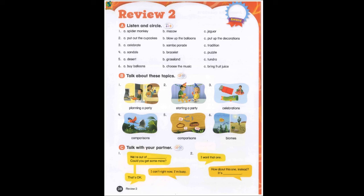The spider monkey is more energetic than the sloth. Who will put up the decorations? She will. 3. What will people in Brazil do in the summer? They'll celebrate carnival. 4. Which bracelet is the cheapest? This bracelet. 5. Which biome is the coldest? The tundra. 6. We'll buy balloons for the party.